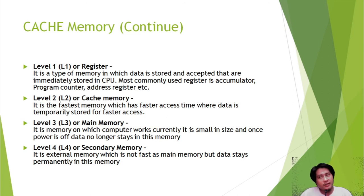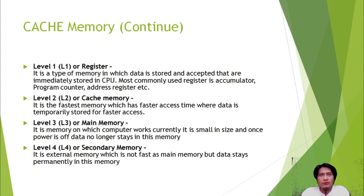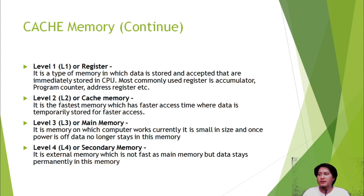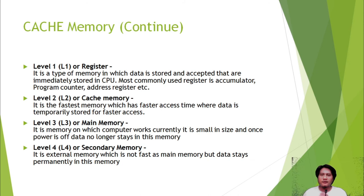Level 3 cache memory is the memory on which the computer currently works. It is small in size, and once power is turned off, data no longer stays in this memory. This is your commonly known random access memory — the memory card attached to your motherboard, colored green. While you are working on your computer, all information needed in your current actions — such as encoding in Microsoft Word — is temporarily saved in your Level 3 or main memory.